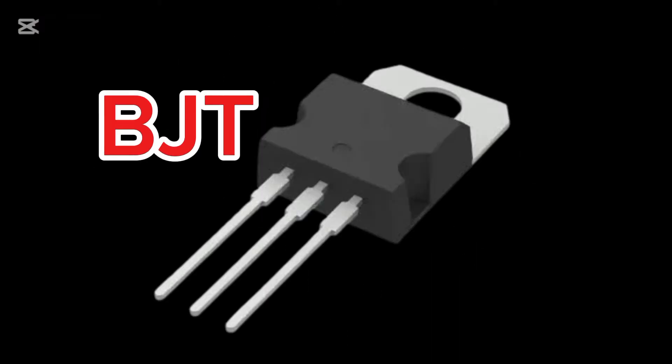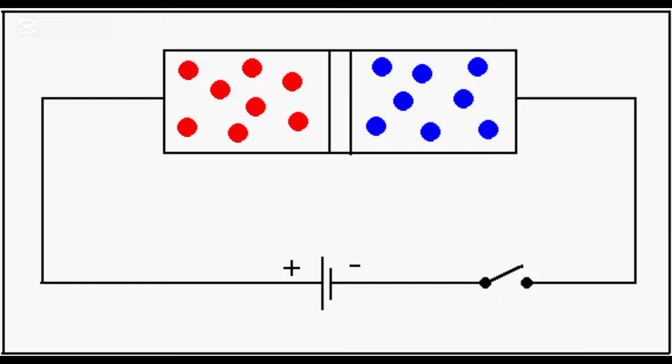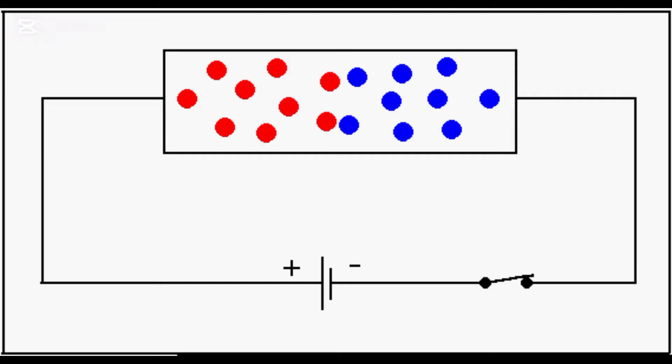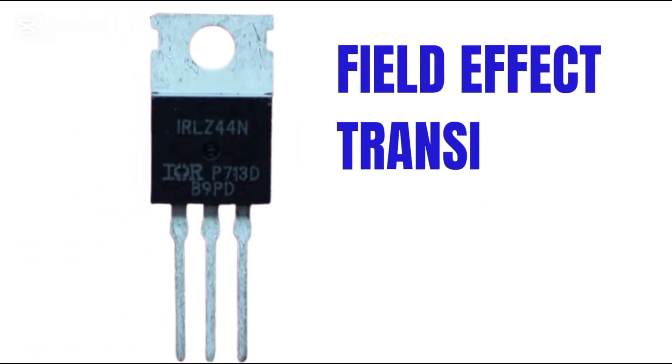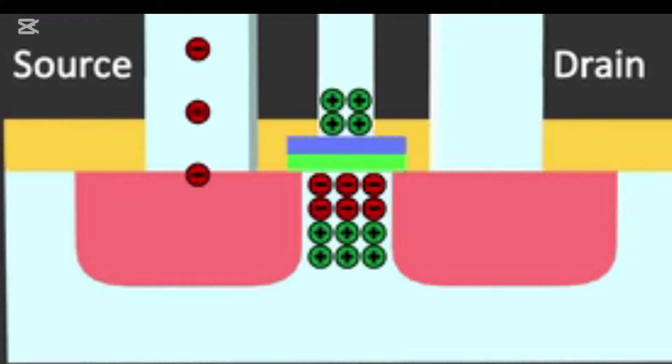A BJT is a three-terminal semiconductor device that can function as either a switch or an amplifier. The term bipolar refers to the use of both electrons and holes in its operation. This is different from field effect transistors, FETs, which use either electrons or holes but not both.